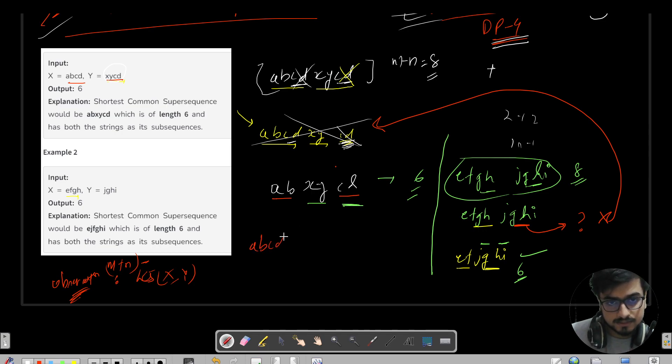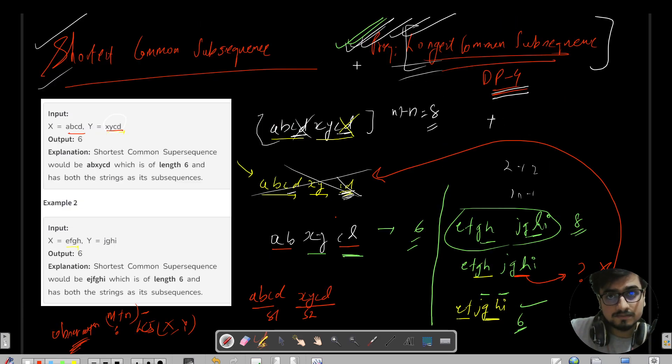Let us do a dry run again for the same test case. This is string one, this is string two. What is the Longest Common Subsequence? Definitely CD. Now if you are not able to get why CD is coming as the LCS, in the starting of the video itself I have told you to go through this video.